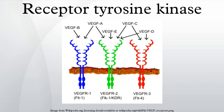A third receptor, VEGFR3, has been discovered. However, VEGF-A is not a ligand for this receptor. VEGFR3 mediates lymphangiogenesis in response to VEGF-C and VEGF-D.